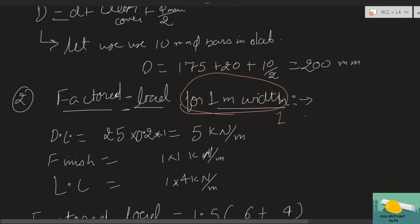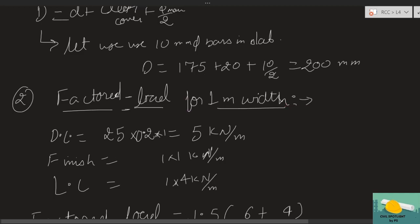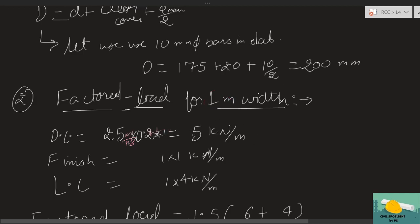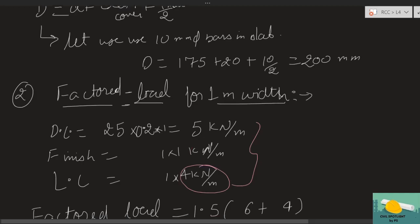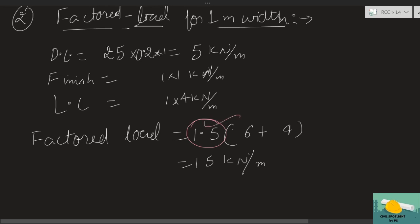Dead load: unit weight of concrete = 25 kN/m³ × 0.2 m (overall depth) × 1 m width = 5 kN/m. Finish load (given as 1 kN/m²) × 1 m = 1 kN/m. Live load = 4 kN/m² × 1 m = 4 kN/m. Total unfactored = 10 kN/m. Applying load factor of 1.5: factored UDL = 15 kN/m.